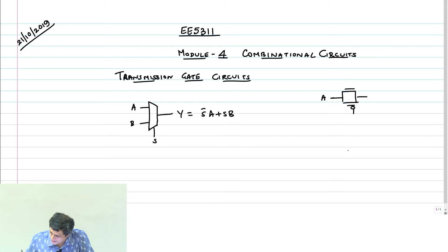So this is the basic idea behind the transmission gate multiplexer. So if you look at this, this is S and this is S̄.